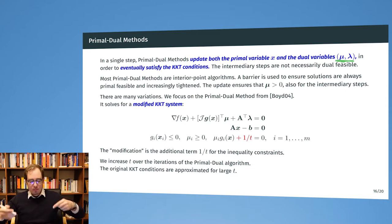This is an iterative algorithm, and we know that we will eventually converge to a solution that solves the KKT conditions. However, the intermediary steps are not necessarily dual feasible. Before we had seen algorithms that are alternating—first optimizing for x, then optimizing for the lambdas—and here we do everything in one step. This will have great consequences for our runtime.